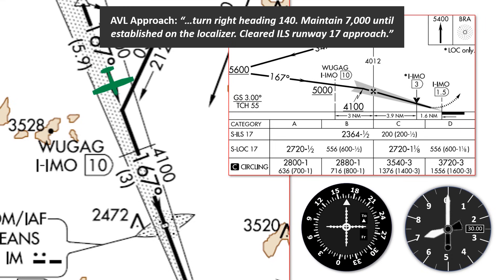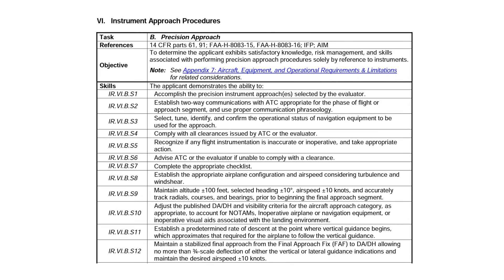Many instrument students will be familiar with the requirement that crops up on a lot of tasks in the instrument ACS, which says that a stabilized final approach will have no more than a three-quarter scale deflection. This is closer to a well-defined definition of being established, but only really applies to the check rider on an IPC. It doesn't get at the idea of being established as described in the regulations we've looked at.